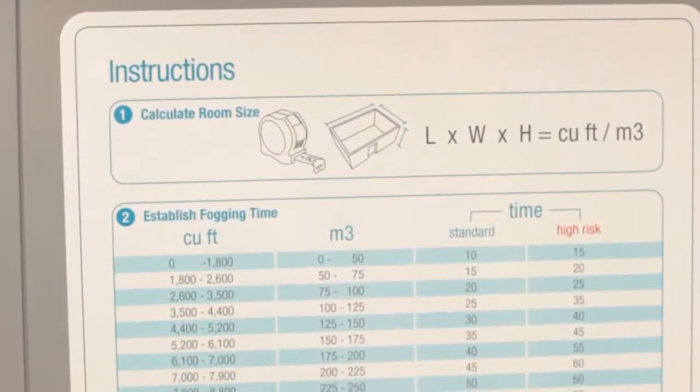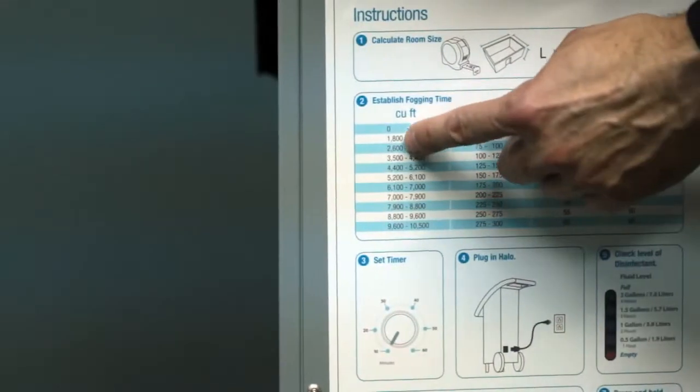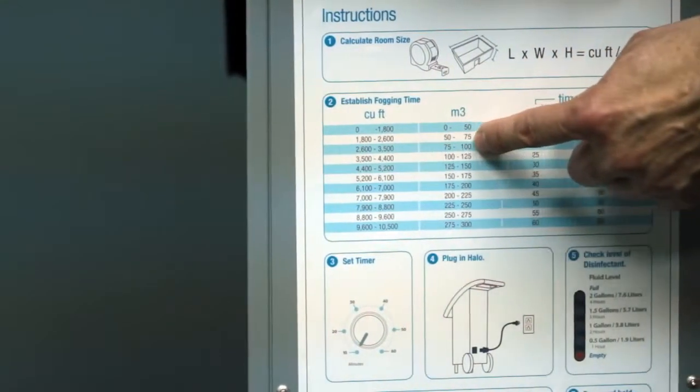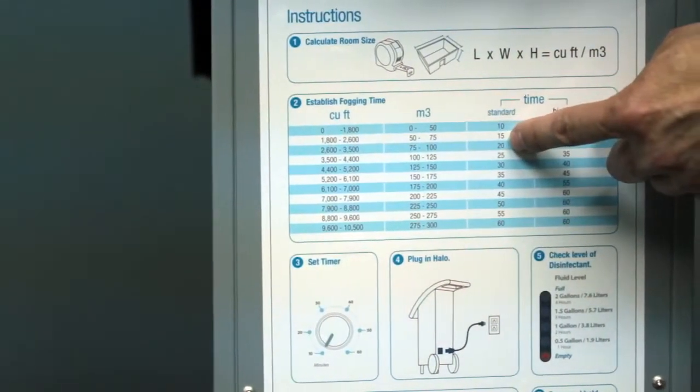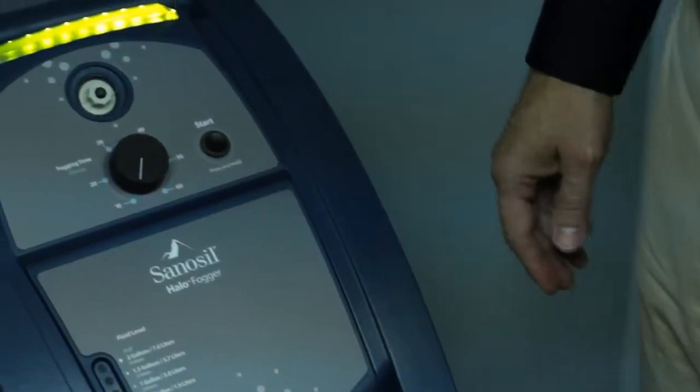On the back of the Halo unit and in the Halo's user manual is a fogging time chart. Determine the fogging time by finding your room size and its corresponding fogging time. Turn the fogging time knob on the front of the Halo to the desired runtime.